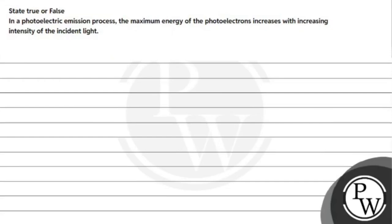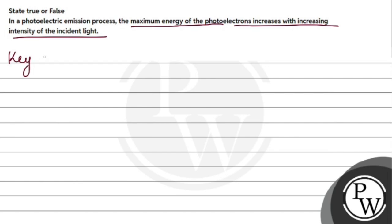Hello students, let's look at this question: State true or false — in a photoelectric emission process, the maximum energy of a photoelectron increases with increasing intensity of the incident light. First, I will show you the key concept.